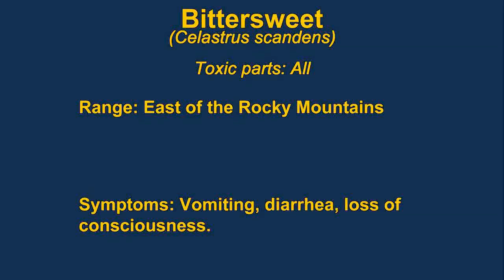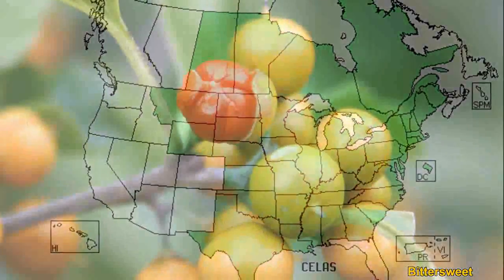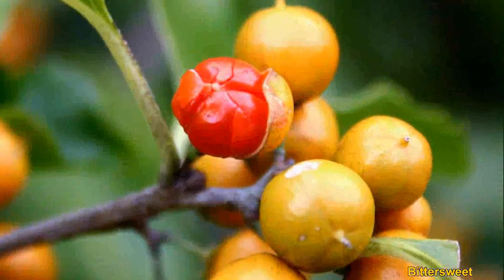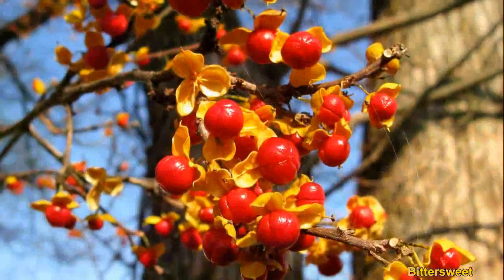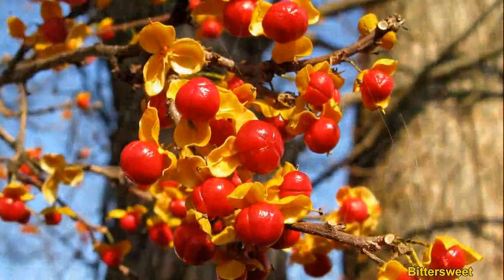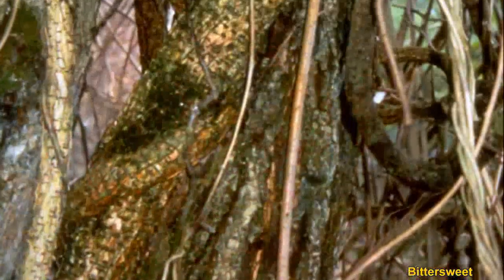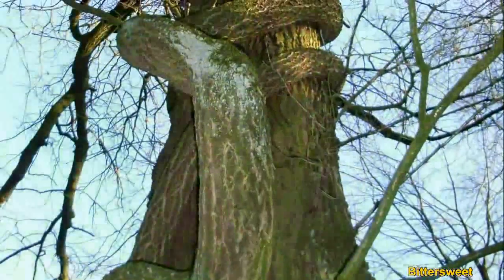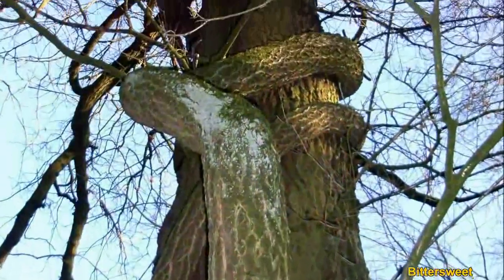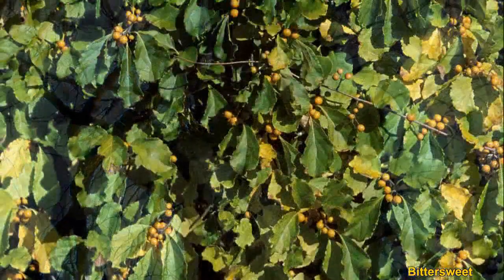American bittersweet is a very stout vine. It often kills the plant that it's climbing on. The fruit of the plant starts out looking a lot like a berry, but later on an orange cover peels off, revealing an intersection with three bright red parts.